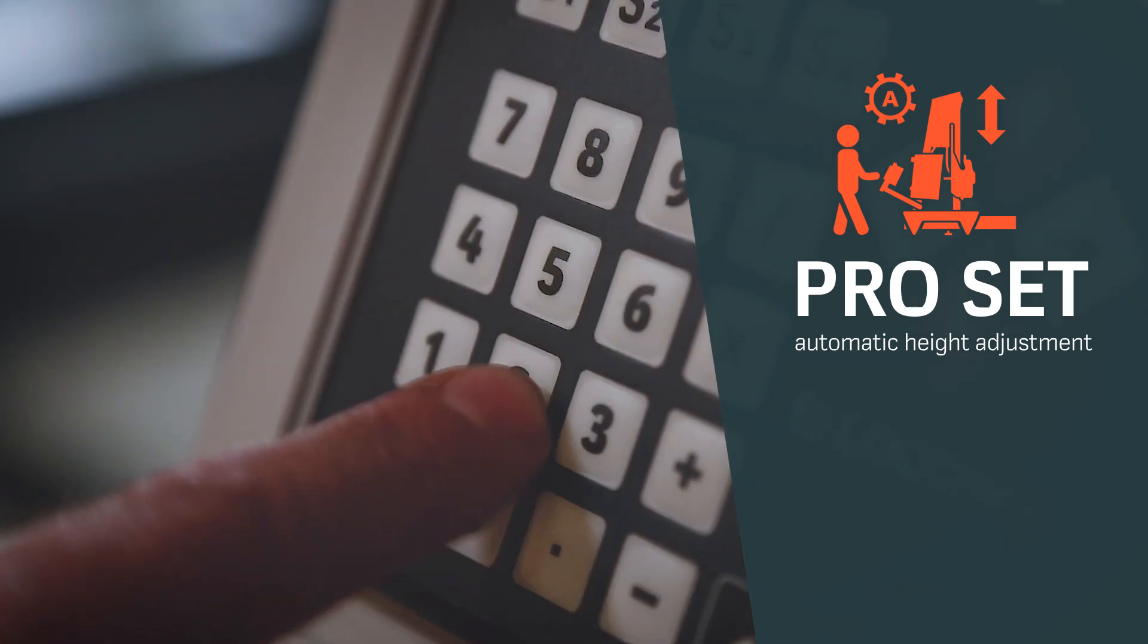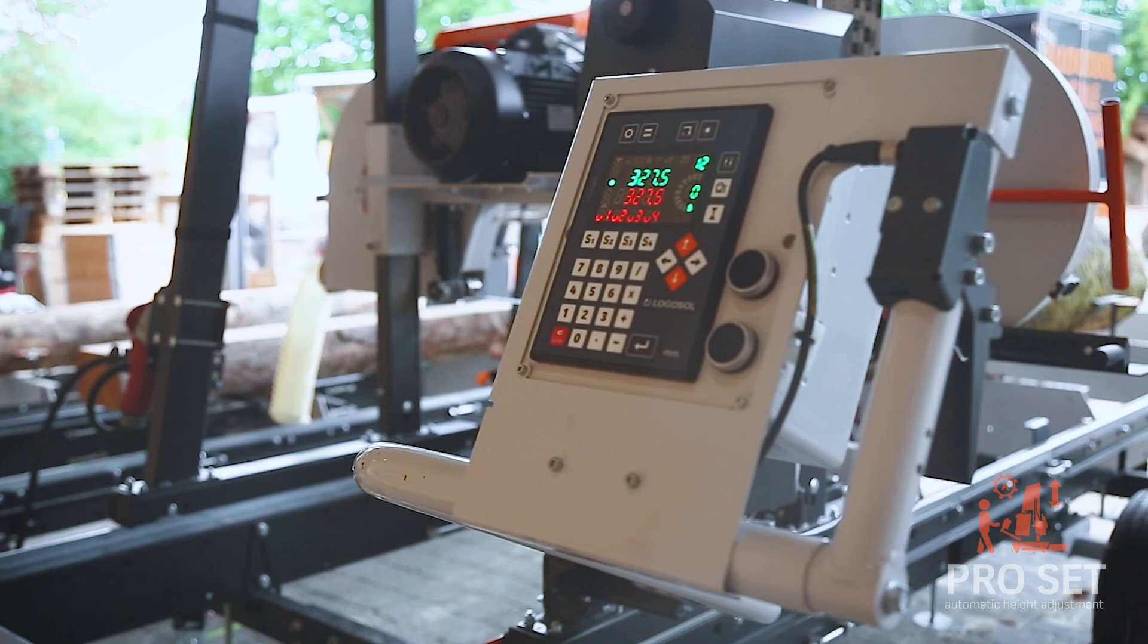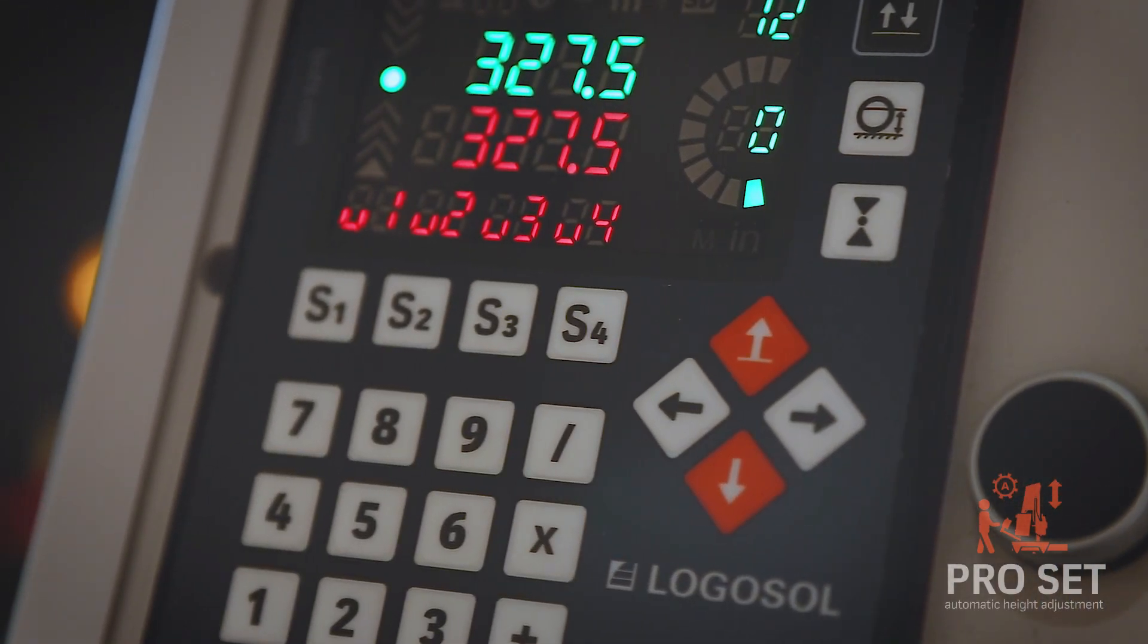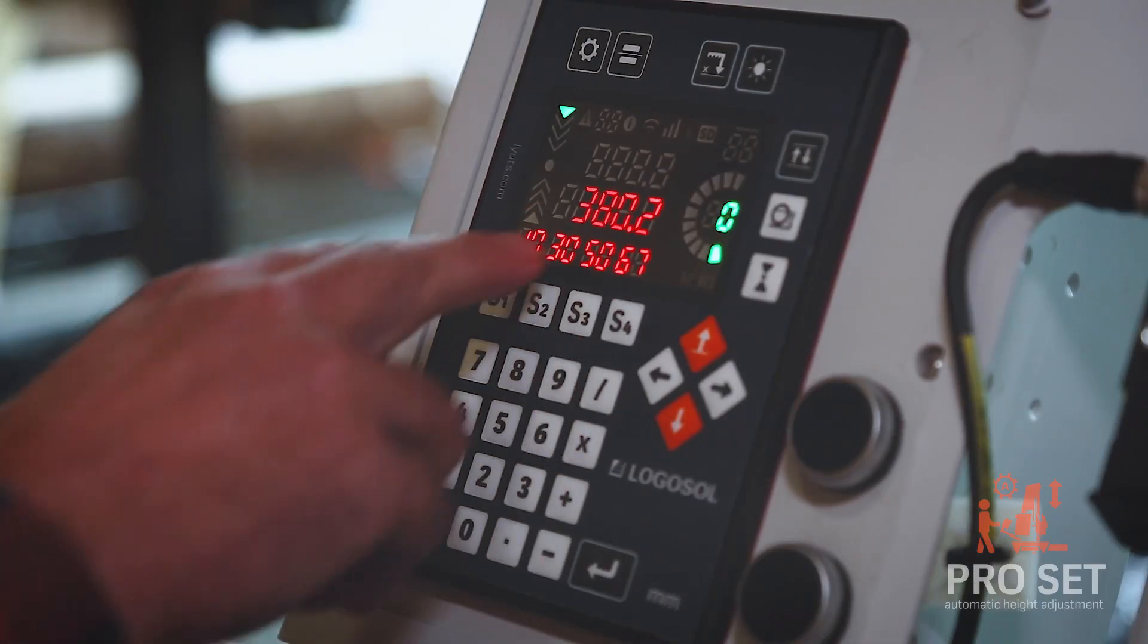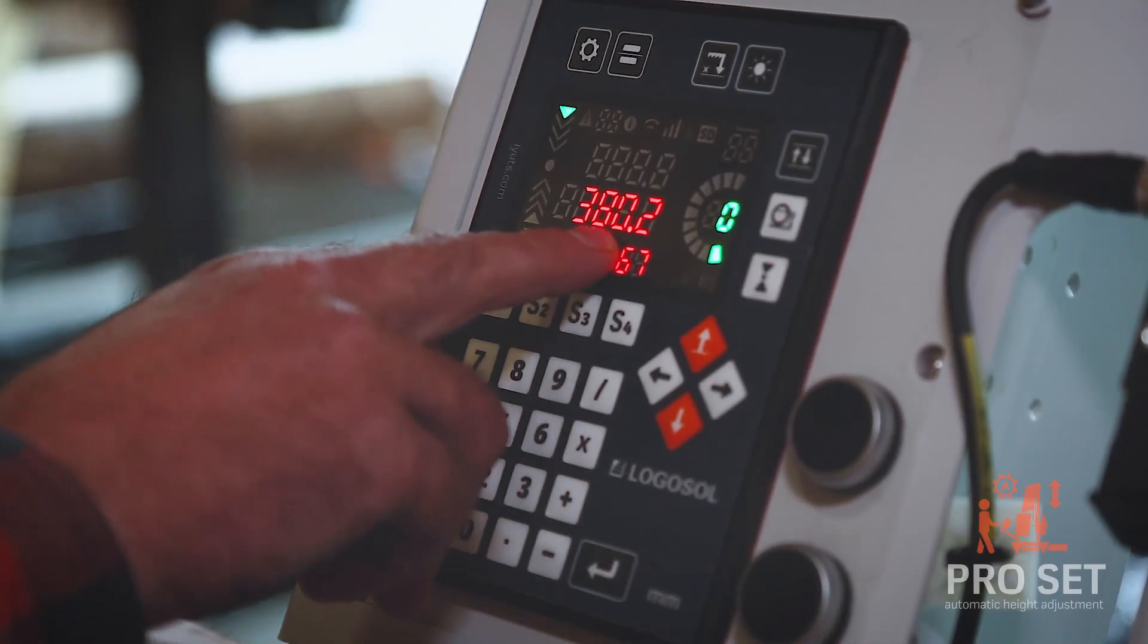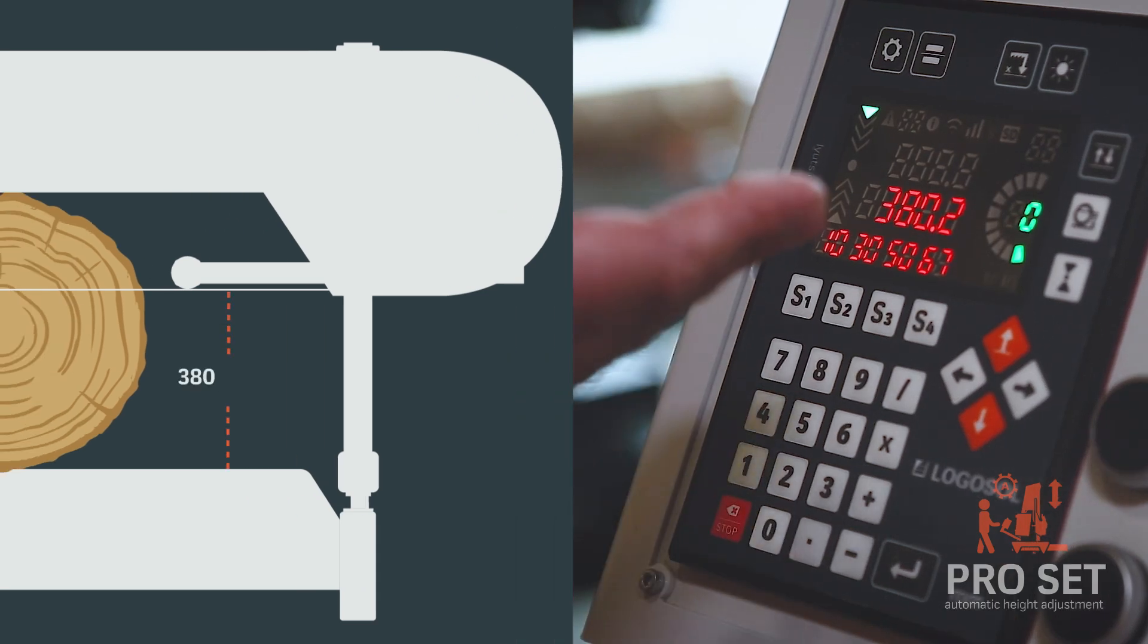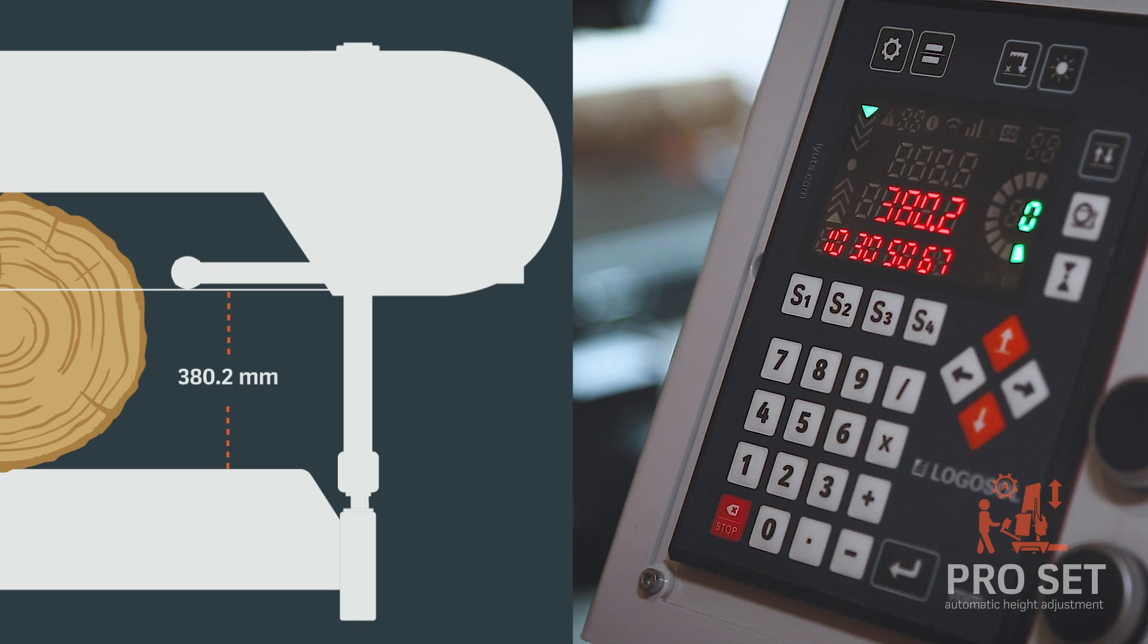This is our new Setworks from Logosol for your Bandsomio. It's one of the best Setworks on the market now for Bandsomio and it's very easy to use. You see on the display the height of the saw blade from the log bed to the bottom side of the saw blade. It's now 380.2 millimeters.